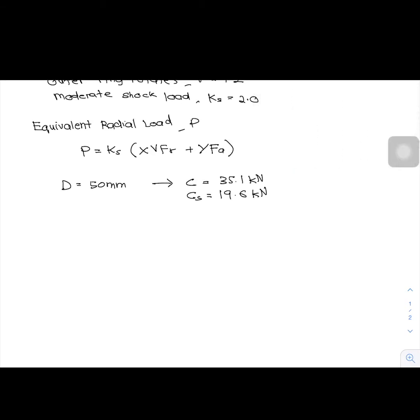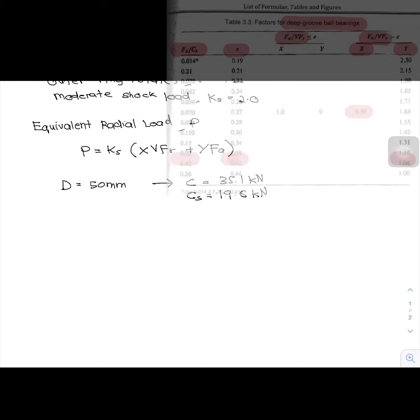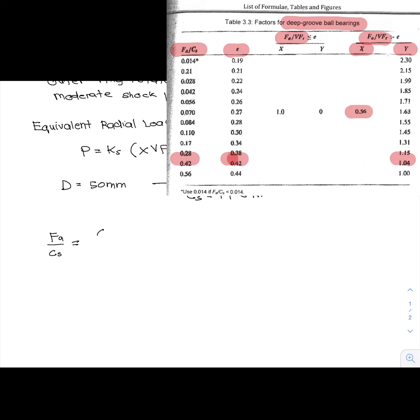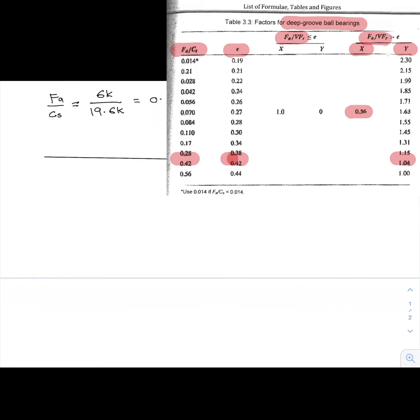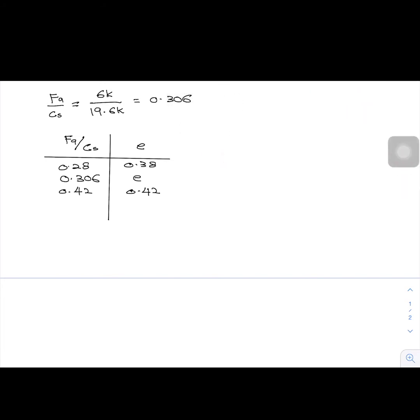After that, refer to the first column of table 3.3. We have to calculate the value of FA over Cs to find the value of E from the second column. So FA over Cs is equal to 0.306. From the value obtained, 0.306 is located in between 0.28 and 0.42. So, the value of E is located in between 0.38 and 0.42.